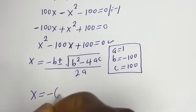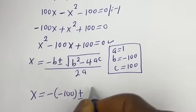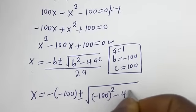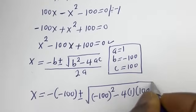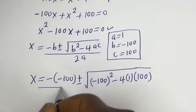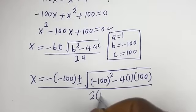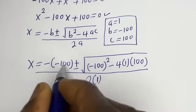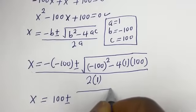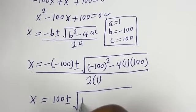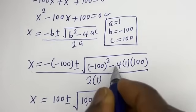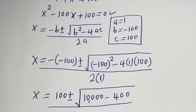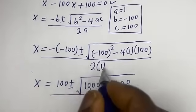x is equal to minus (minus 100) plus or minus square root of (minus 100) squared minus 4 multiplied by 1 multiplied by 100, everything divided by 2 multiplied by 1. So x is equal to 100 plus or minus square root of 10,000 minus 400, divided by 2.